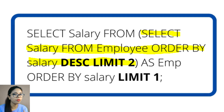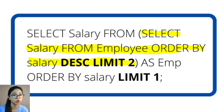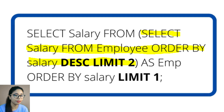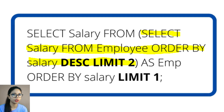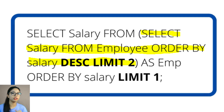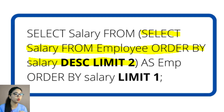LIMIT means whatever number you give, the result will fetch exactly that many rows — LIMIT 2 fetches two rows, LIMIT 3 fetches three rows, LIMIT 1 fetches one row. In the inner query, we use ORDER BY, which is a clause used to arrange records in ascending or descending order. By default it is ascending, so to make it descending you need to add DESC after ORDER BY. So the inner query orders records descending: 7k, then 5k, then 2k.